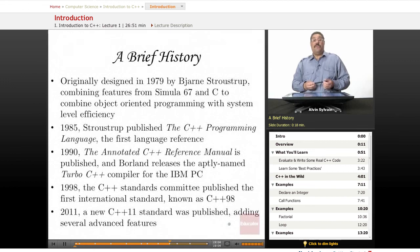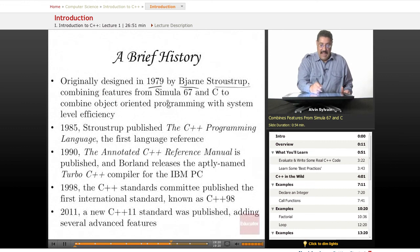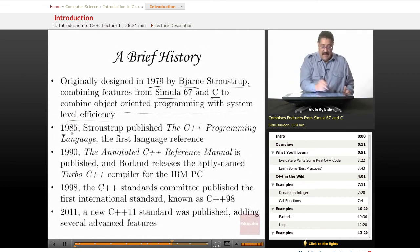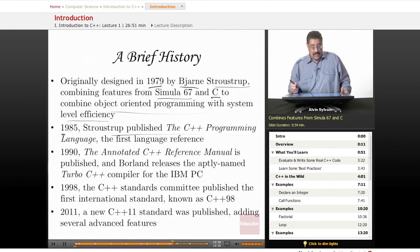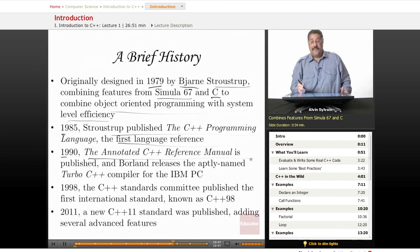Let's cover a brief history of C++. This was originally designed in 1979 by Bjarne Stroustrup. Don't worry about how to pronounce his name. If you're not born in Denmark, it's difficult. He combines the features from Simula 67 and C to create an object-oriented programming with system-level efficiency. So he created a new language. It went through a bunch of iterations. But he finally, in 1985, published the C++ programming language, which was the first language reference for C++. In 1990, the annotated C++ reference manual was published.